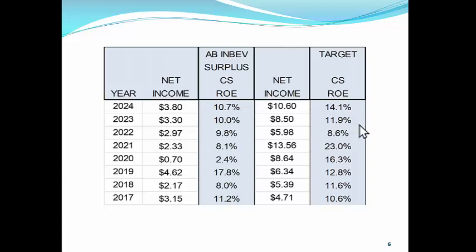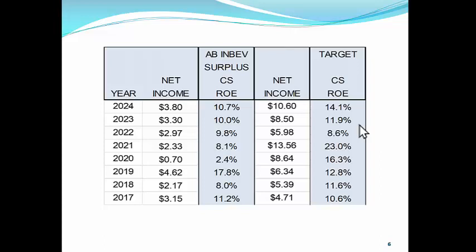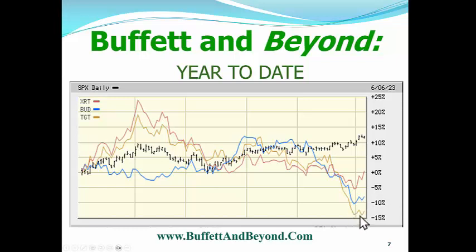What this brings into question is the political statements both Budweiser and Target have made. Let's take a look. We are now looking at the year-to-date performance. The black line is the S&P 500 — we compare everything to the S&P 500. The red line down here is the retail ETF, symbol XRT, which has been underperforming the general market year-to-date. So you would think Budweiser and Target would have headwinds, and they certainly do. Here's Budweiser and here's Target.